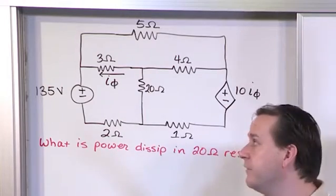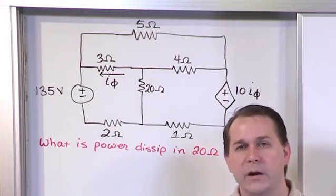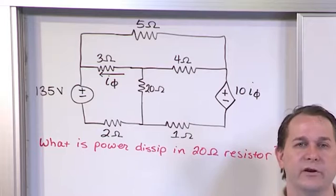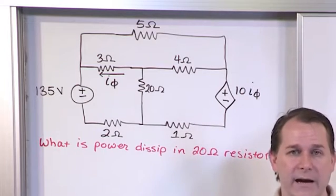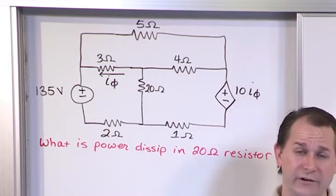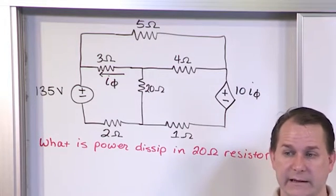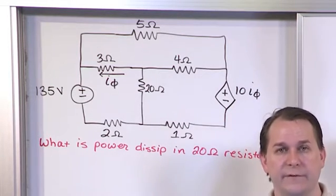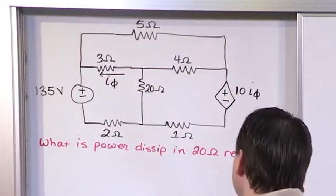What you're going to find is that since you have a dependent source here, you're going to naturally introduce another variable, this one being I sub phi, and then you're going to need to use a constraint equation to basically round out your system and give yourself enough equations. So let's go ahead and take it one step at a time.